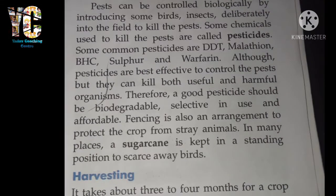How can you control these pests? Number one: biologically, by introducing some birds into the field to kill the pests. There are particular types of pests that birds eat, so introduce birds that are able to eat these pests. This is called biological control of pests.